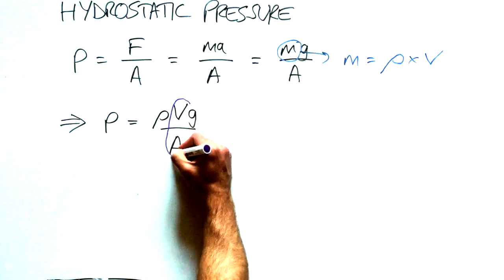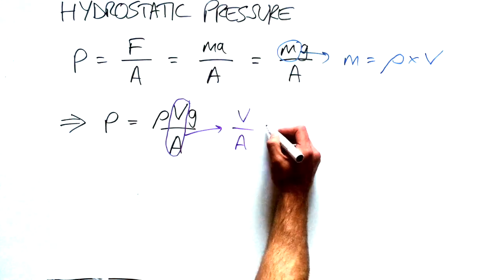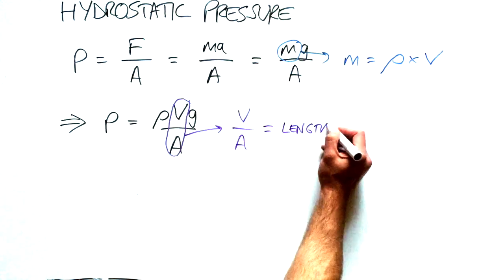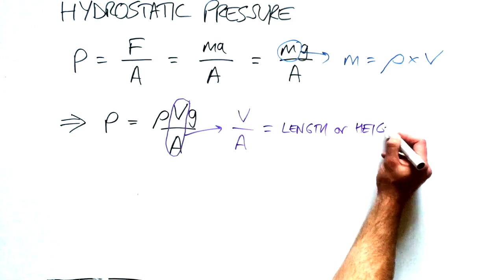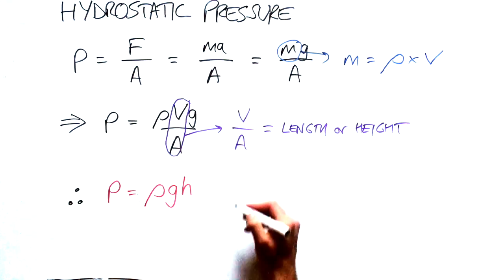Now volume divided by area, take this out, that would be equal to length or height of a container. Therefore pressure is equal to density times gravity times height. We've eliminated volume divided by area.